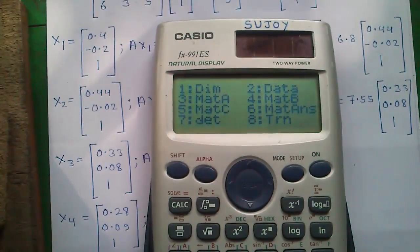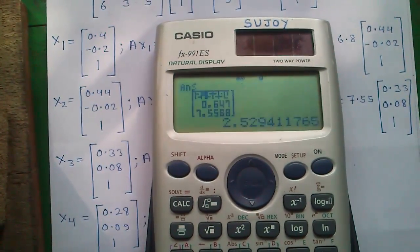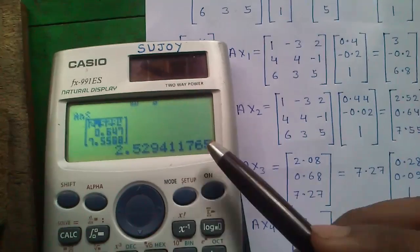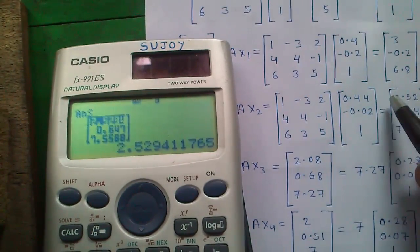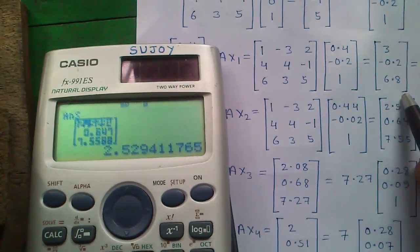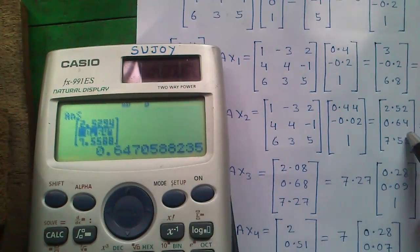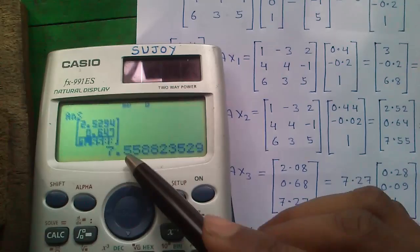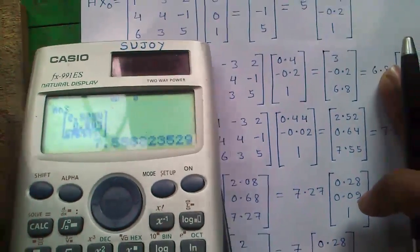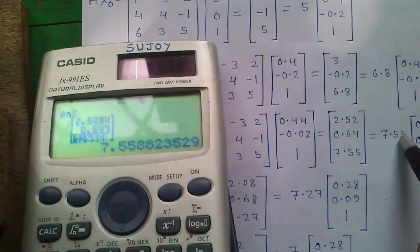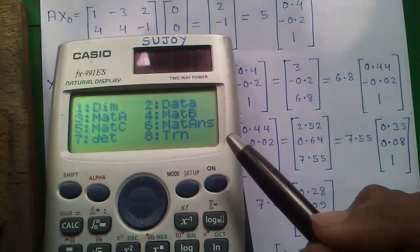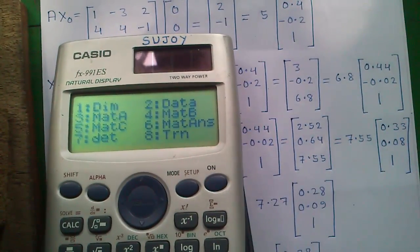Press shift 4, matrix A, multiply, shift 4, matrix answer, and press equals. A into x2 becomes 2.52, 0.64, and 7.55. We will divide it by 7.55.